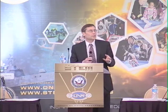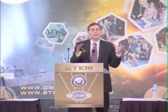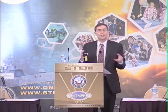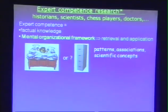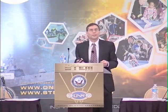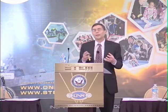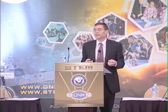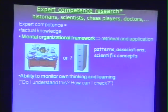That organizational framework is such that it makes it very effective for experts to retrieve and apply information at suitable times to solve problems. These organizational frameworks involve recognizing certain complex patterns, associations, and relationships. Much of what we talk about as scientific concepts is actually the way scientists in a field organize a whole lot of different pieces of information into one chunk that, when faced with a problem, they can bring up and use. The third key element of expertise is an ability to monitor one's own thinking and learning in the discipline.